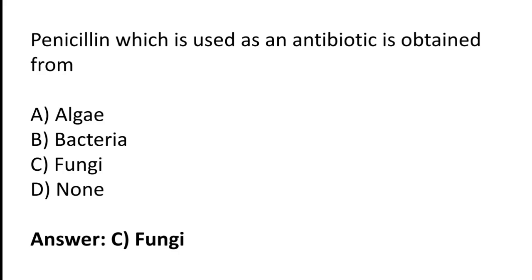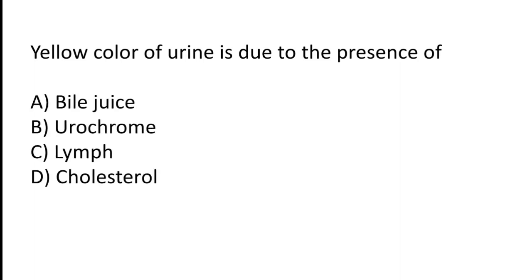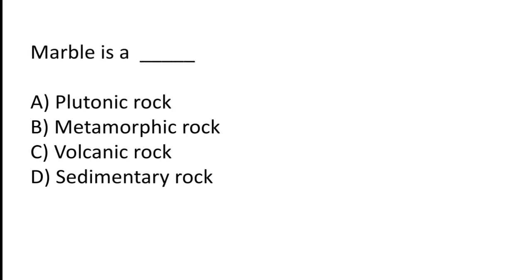The yellow color of urine is due to the presence of: bile juice, urochrome, lymph, or cholesterol? The correct answer is option B — the yellow color of urine is due to the presence of urochrome.